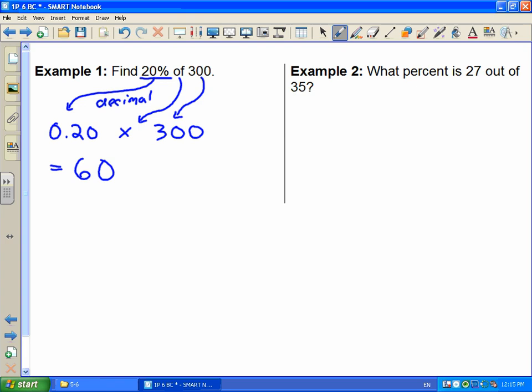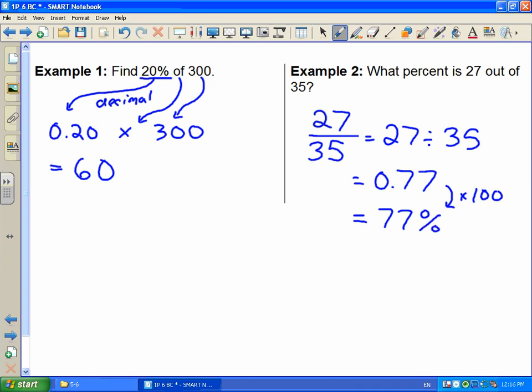The other kind of question is, what percent is 27 out of 35? We can take our two numbers and write them as a fraction, 27 out of 35, like a test mark. The test was out of 35, we scored 27. Then we do that division, 27 divided by 35, and we get 0.77. We can turn our decimal into a percent by multiplying by 100, which gives us 77 percent.